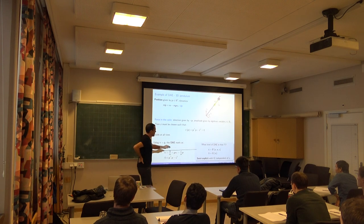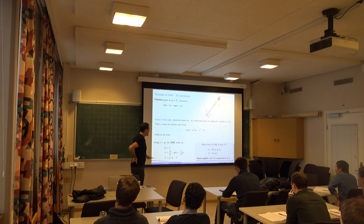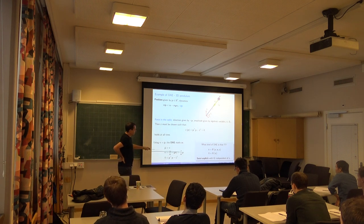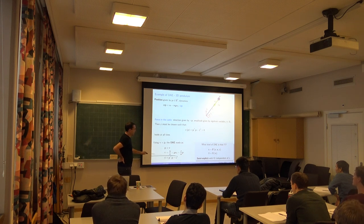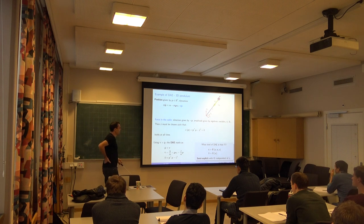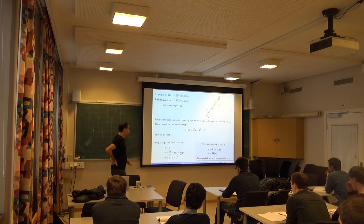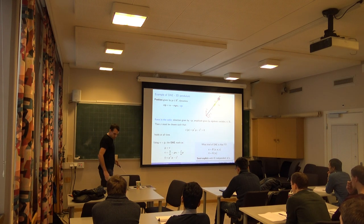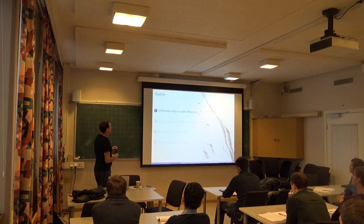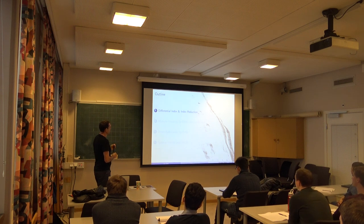There's a problem with this DAE form: I need to select Z, knowing I should pick Z such that the constraint holds—but Z does not even appear in the constraint equation. I cannot solve the algebraic equation for Z. This relates to something called the differential index of the DAE. The index is the number of times you need to differentiate the DAE with respect to time until you get a pure ODE. The solution is called index reduction, and it's not as complicated as it sounds.